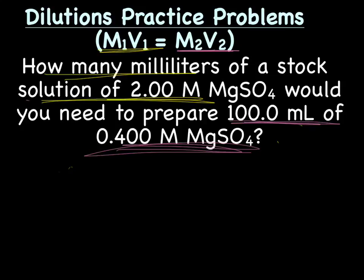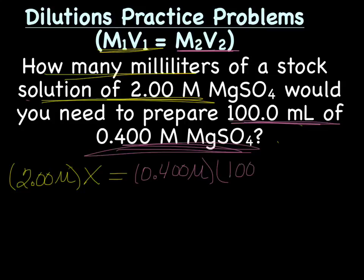So all we've got to do now is plug it in. So our M1, we've decided, is 2 molar. Our V1 is how many, which means it's an X. And then our M2 is 0.400 molar. And our V2 volume is 1,000 milliliters. Easy enough? Okay, and from here, we will just solve.